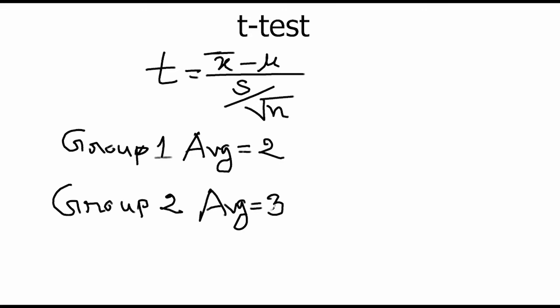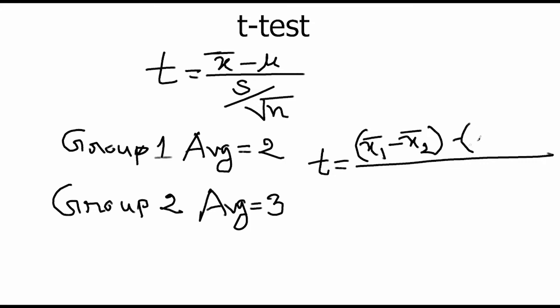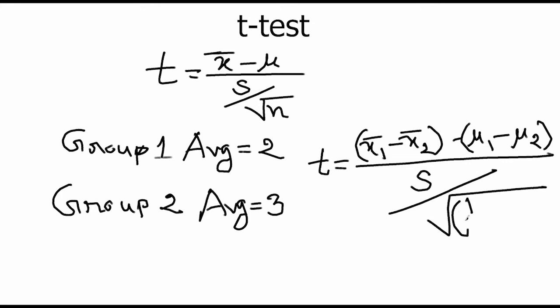The t-statistic for two samples is: t equals (x1-bar minus x2-bar) minus (mu1 minus mu2), divided by s times the square root of (1 over n1 plus 1 over n2). Here, x1-bar is the mean of the first group, x2-bar is the mean of the second group, mu1 is the hypothesized mean of the first group, mu2 is the hypothesized mean of the second group, s is the pooled standard deviation, n1 is the total number of samples in the first group, and n2 is the total number of samples in the second group.